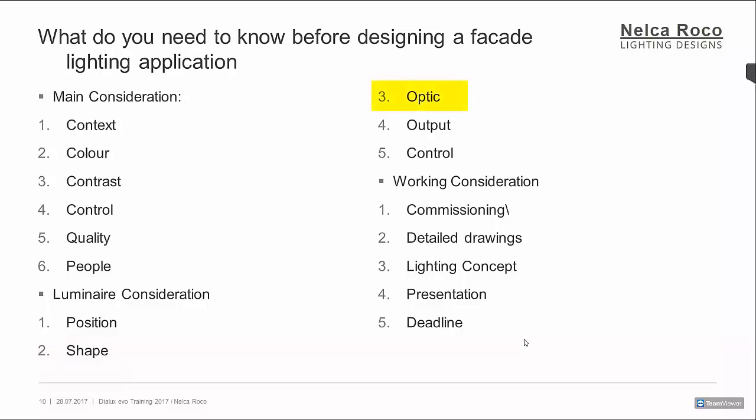Optics — there are different kinds of optics. For floodlights, there's wide beam, narrow beam, and different optics give different effects on your facade. For example, if you want even illumination or wall washing, you don't need a narrow optic. You want a wide beam or a linear flood to achieve wall washing or even illumination on the facade.